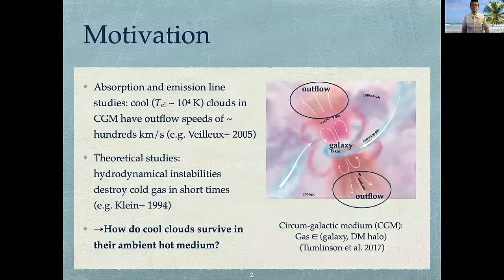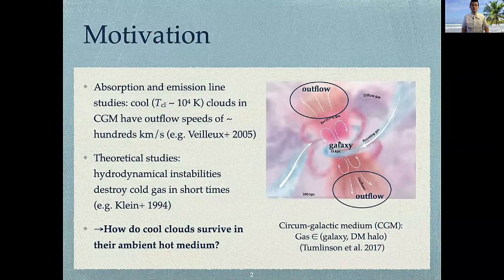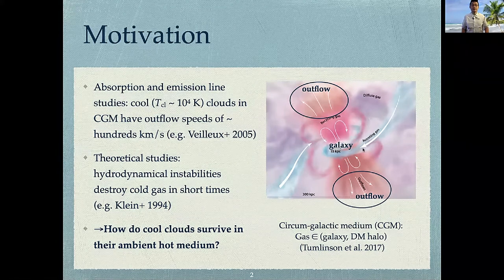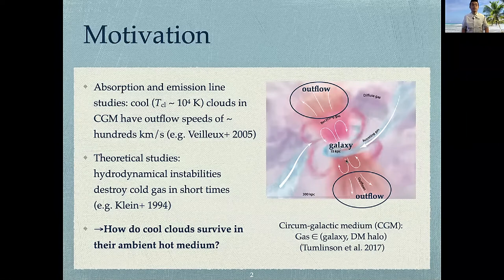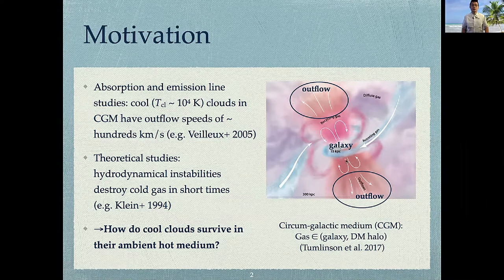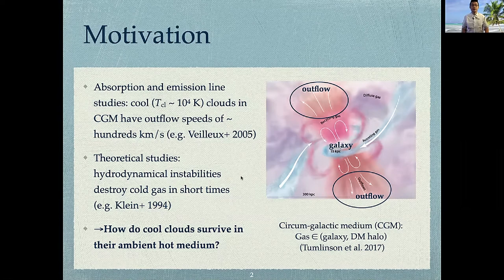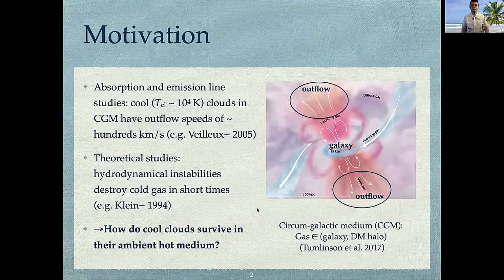So the motivation of this work is pretty straightforward. As shown in this picture, in the circum-galactic medium, which is the gaseous matter outside of galaxies or inside of dark matter halos, many absorption and emission line studies have shown that cool clouds have outflow speeds of hundreds of kilometers per second. However, on the theoretical side, it is expected that these cool clouds are destroyed by hydrodynamical instabilities in relatively short times. So how can these clouds survive long enough to get accelerated to high velocities in the hot medium? That is the question we want to answer in this work.